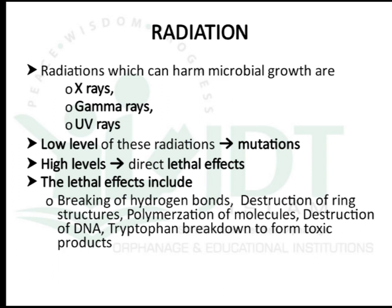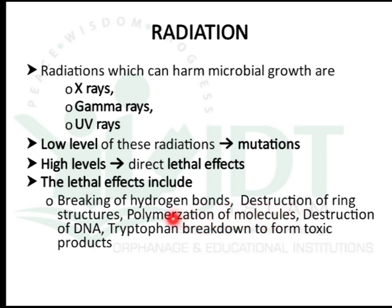The next factor is radiation. Harmful radiation to microbial growth includes X-rays, gamma rays, and UV rays. At low levels, radiation causes mutation; at high levels, it may cause lethal effects or death due to breaking of hydrogen bonds, destruction of ring structures, polymerization of molecules, destruction of DNA, or tryptophan breakdown to form toxic products.